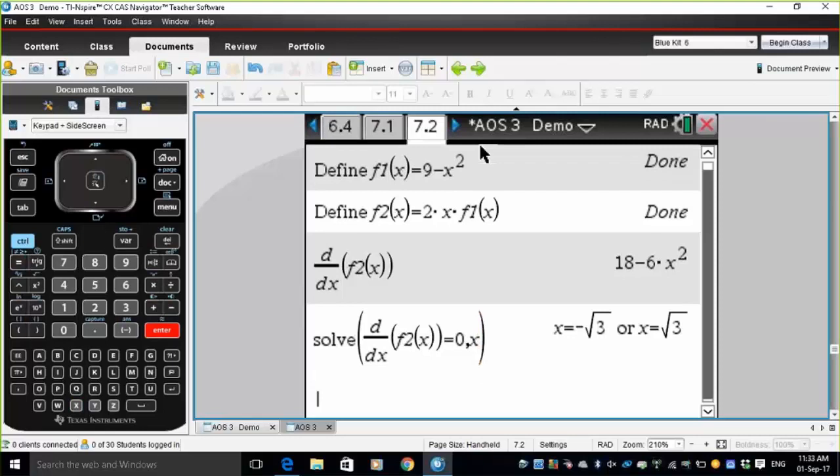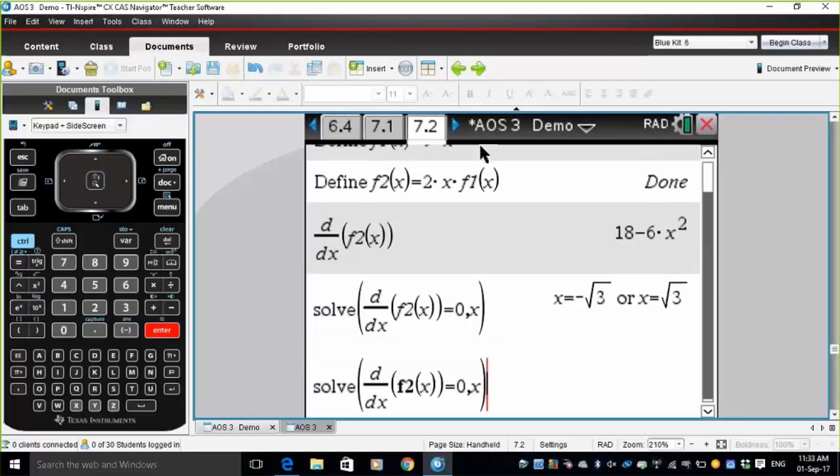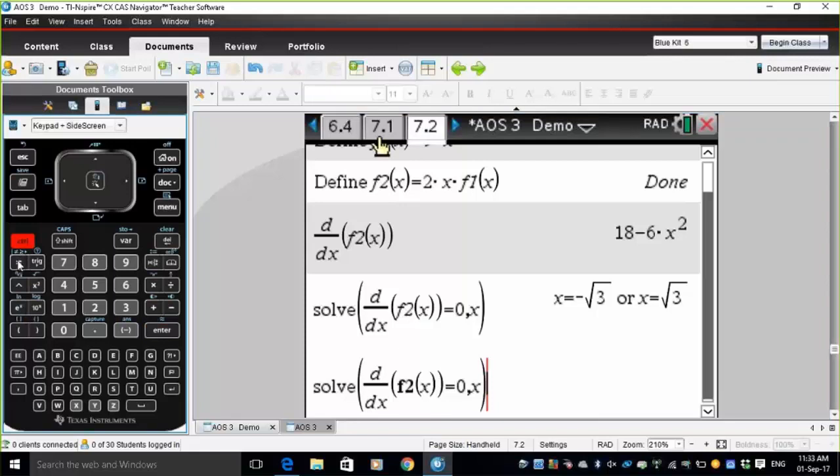x equals negative root 3 or positive root 3. But we can only find the positive value if we restrict the domain to say x is greater than zero. So control equals to get the given command.